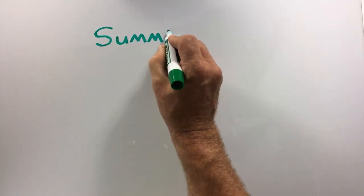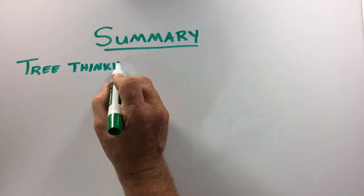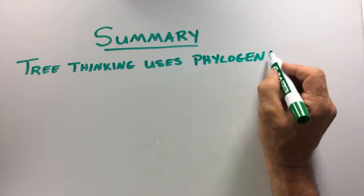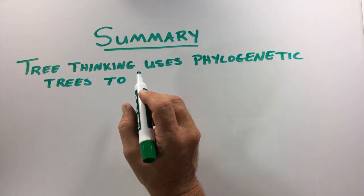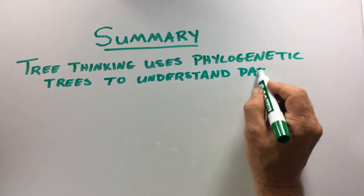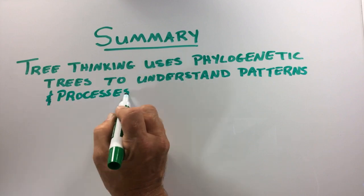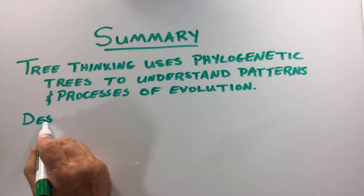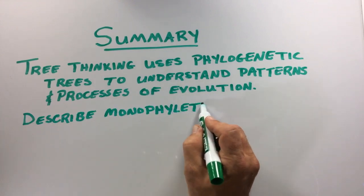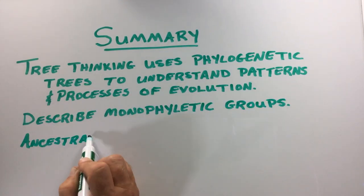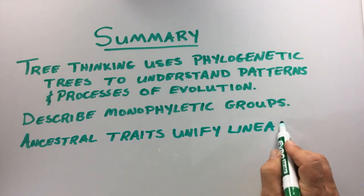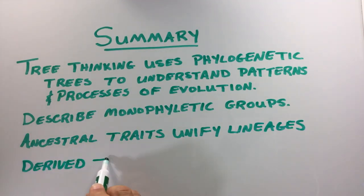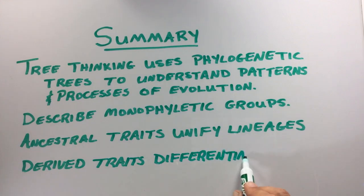To summarize, the ability to correctly apply tree thinking allows one to interpret and explain the information about the patterns of evolutionary relationships that are contained in phylogenetic tree diagrams. Biologists use these diagrams extensively to identify monophyletic groups using shared ancestral traits that show unity and common ancestry among clades, and derive traits that help to differentiate and identify unique evolutionary traits and lineages.